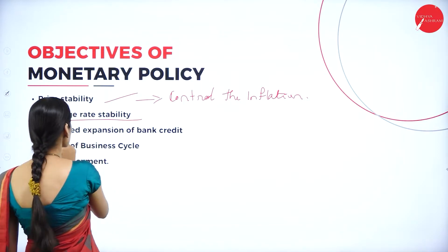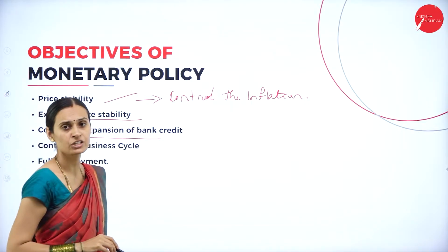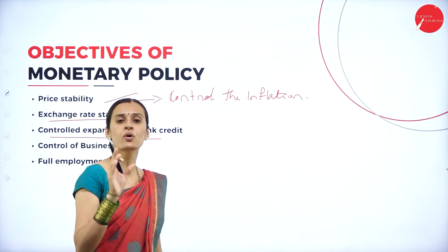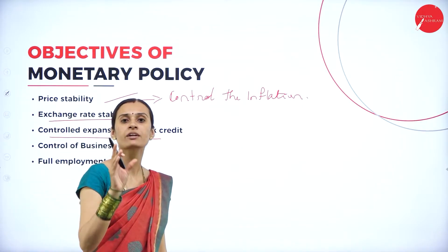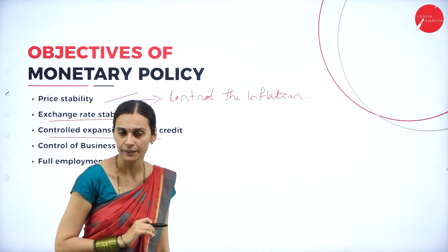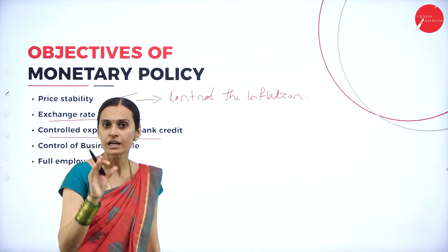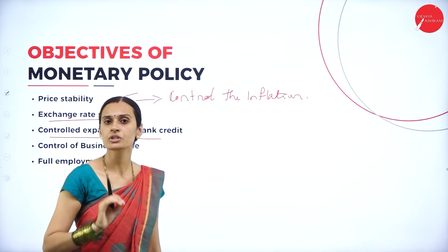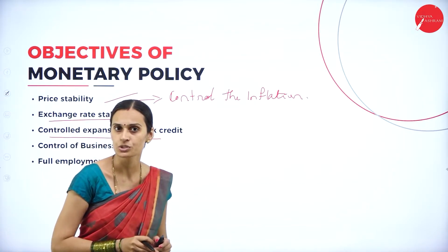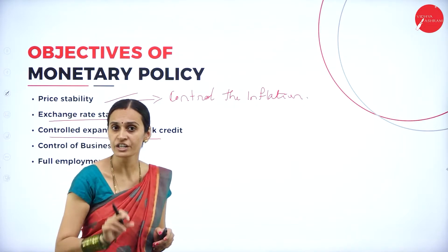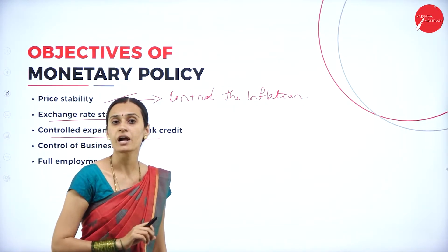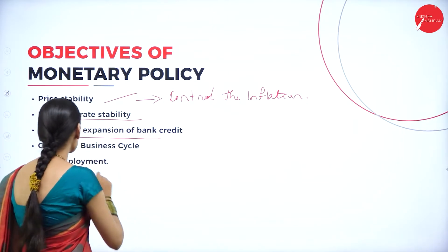The next objective is controlled expansion of bank credit. Every commercial bank should follow the rules and regulations determined by RBI. RBI controls all the commercial banks and other financial institutions. Provisions of volume of credit are also directed by RBI.